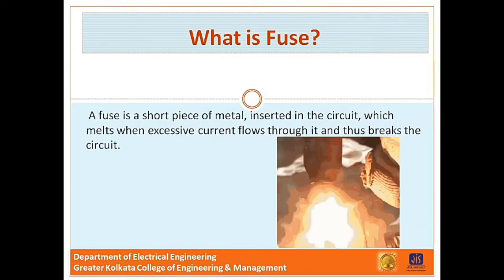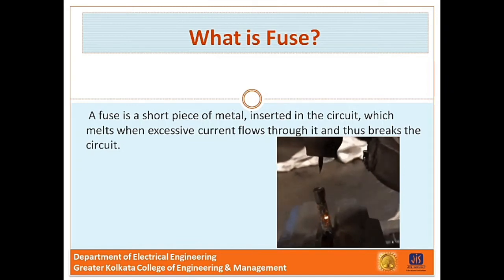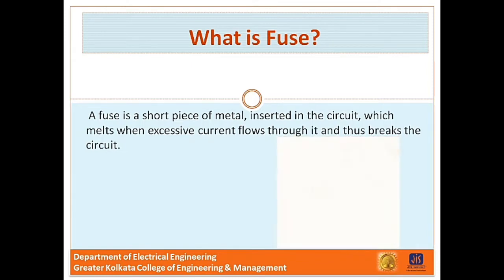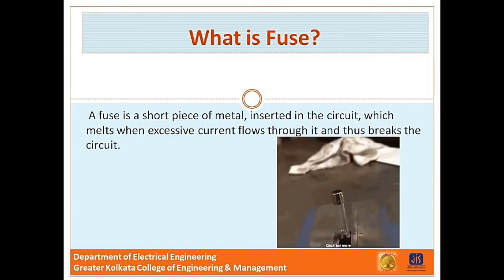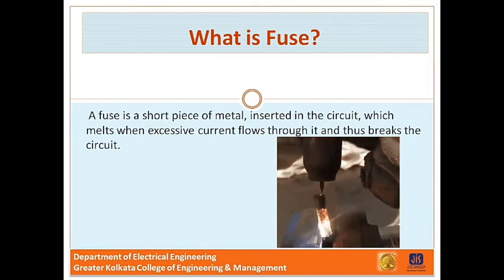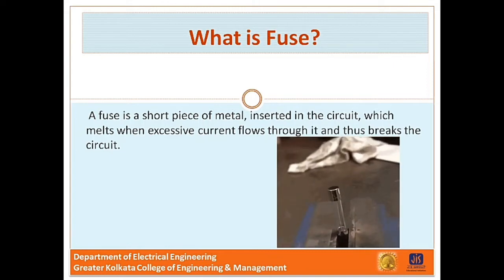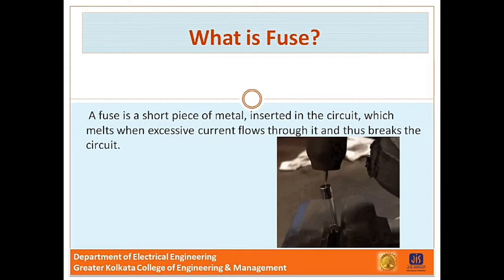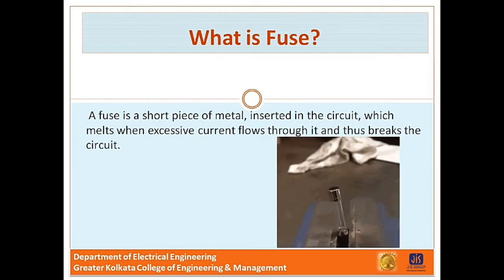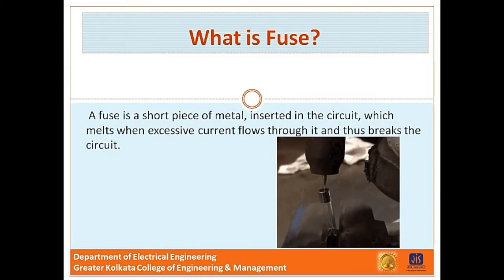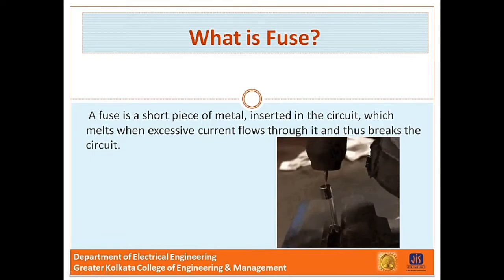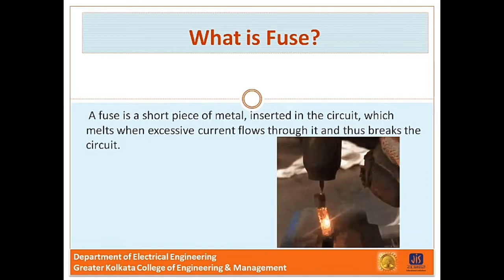Under normal operating conditions, the fuse element is at a temperature below its melting point; therefore it carries the normal current without overheating. If a fault occurs — a short circuit or an overload — the current through the fuse increases beyond its rated value. This raises the temperature and the fuse element melts or blows out, disconnecting the circuit protected by it. In this way, a fuse protects machines and equipment from damage due to excessive current. In this video, you can see that when a high current is applied on the fuse, the fuse element blows out.